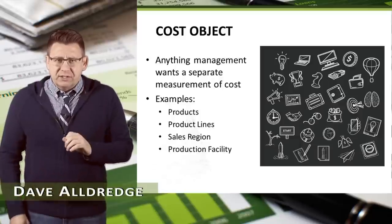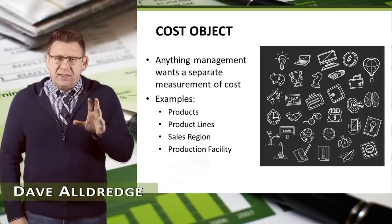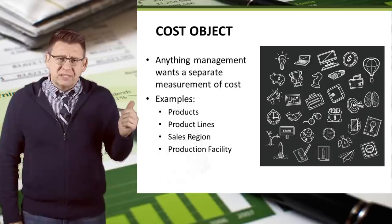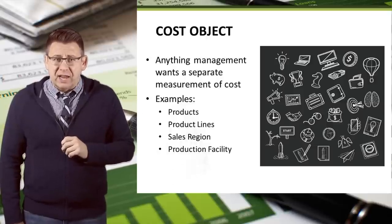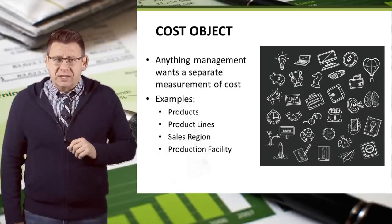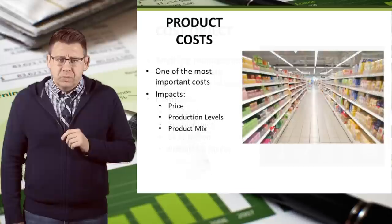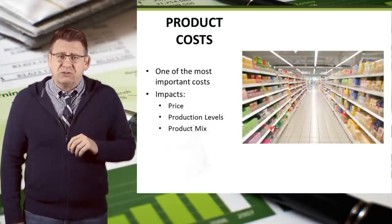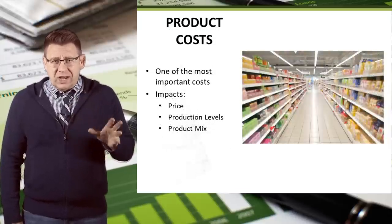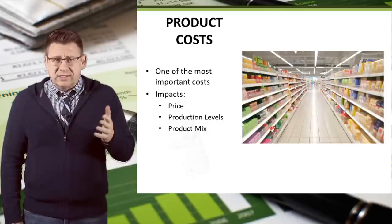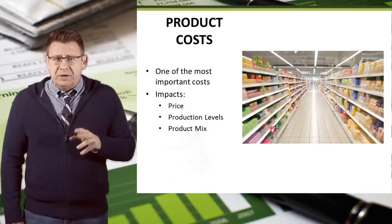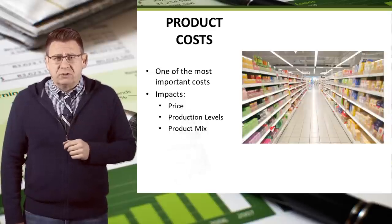A cost object is anything a manager might want to know the cost of. You can see some common examples on the slide, but the most common is the cost of a product. Product costs are one of the most important costs managers need to know. Knowing the cost of a product is a necessity to make sure that it's priced correctly, or if the company should increase or decrease production or even discontinue the product altogether.